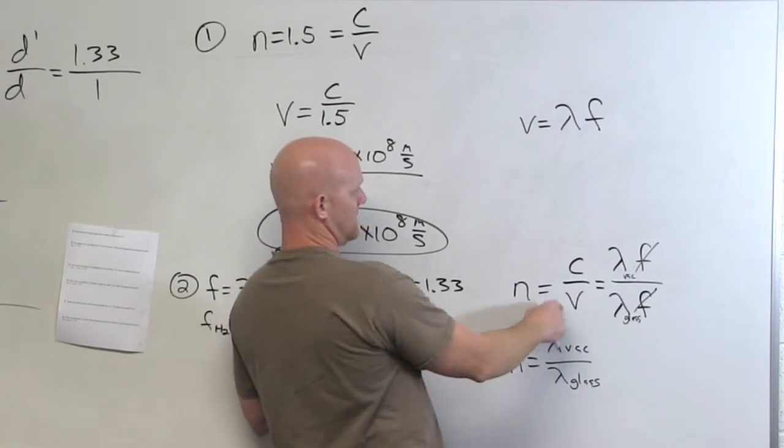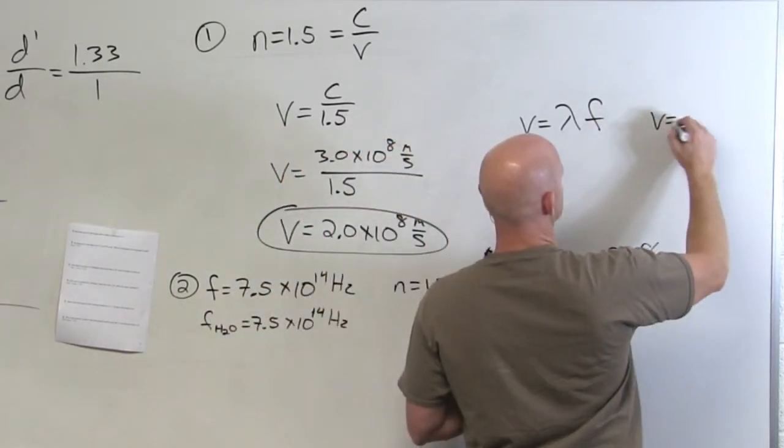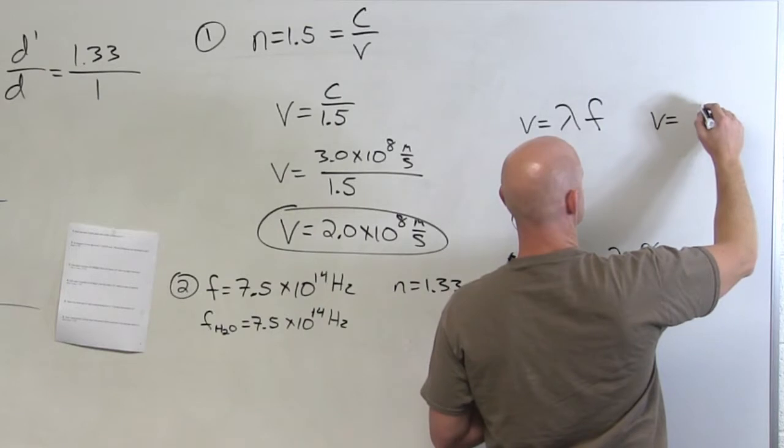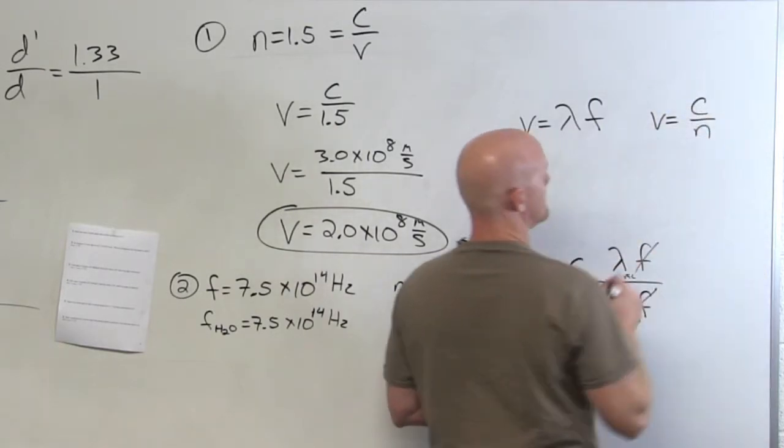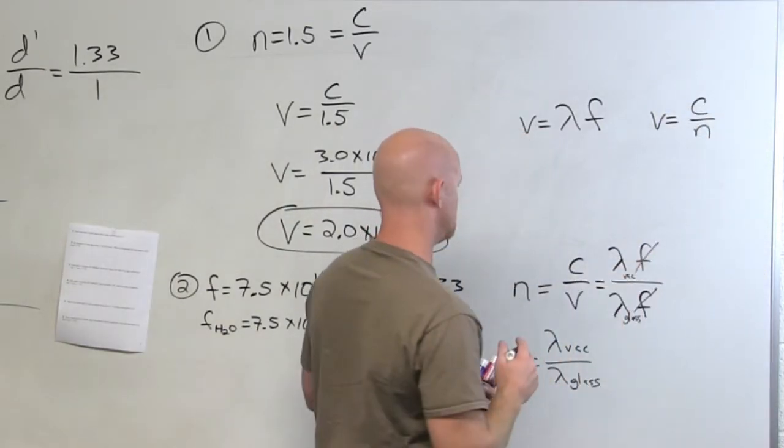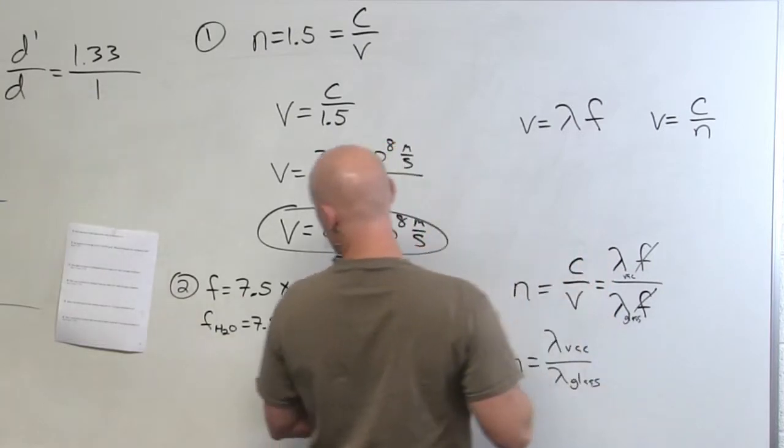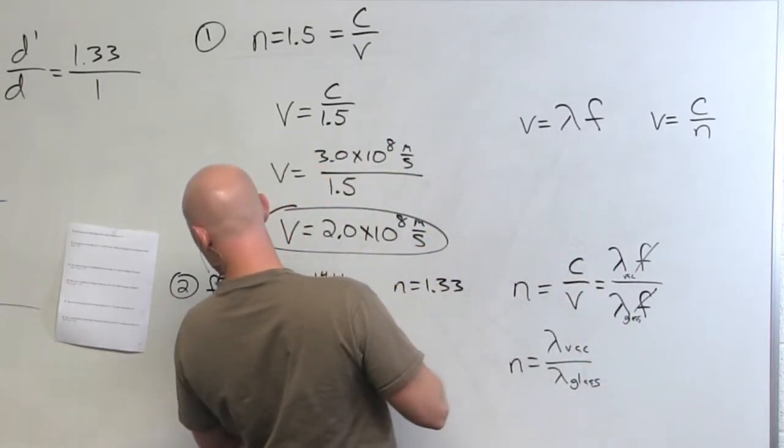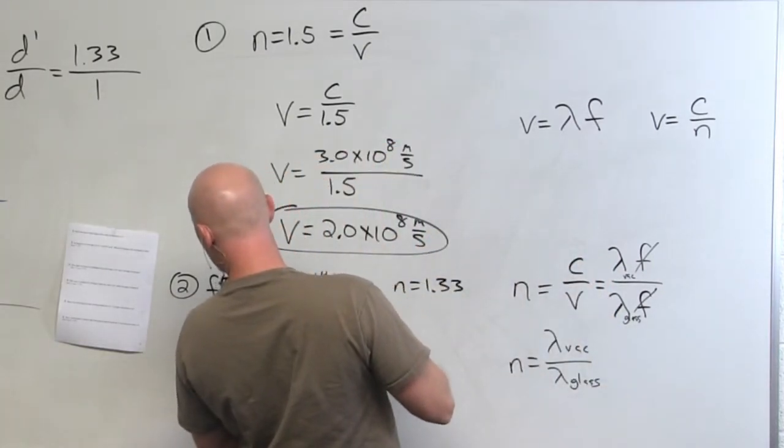So in this case, if I want to get the velocity here, speed of light in a vacuum over N. And we already figured this out, didn't we? No, we're in water. My bad.